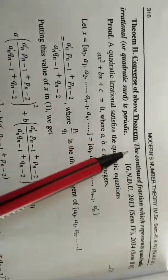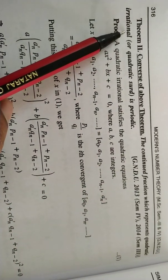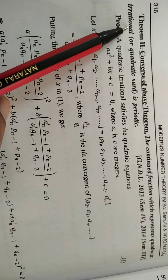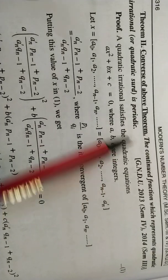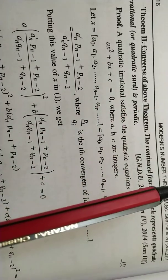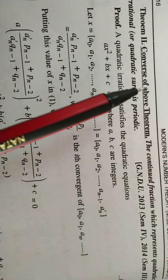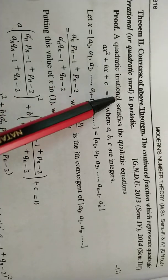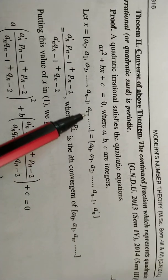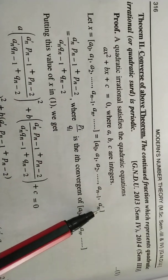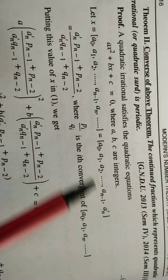Now we prove the converse theorem: the continued fraction which represents a quadratic irrational is periodic. We start with x satisfying a quadratic irrational equation, and write x as a continued fraction starting from a_n, expressed as a_n, a_{n+1}, a_{n+2}, and so on.